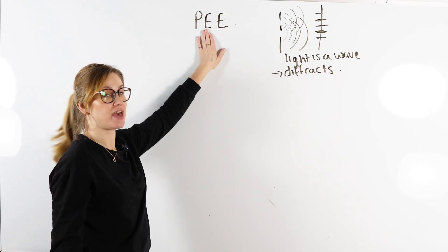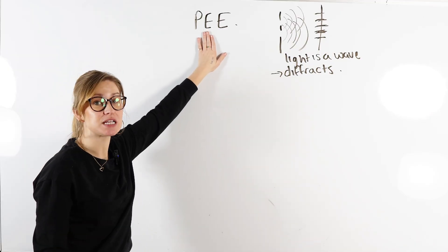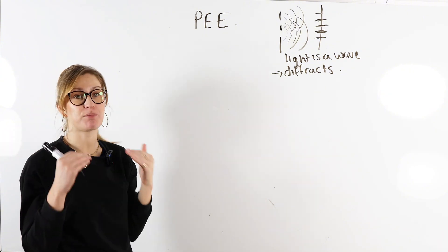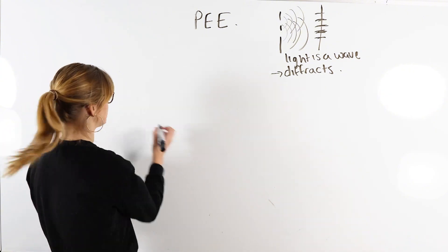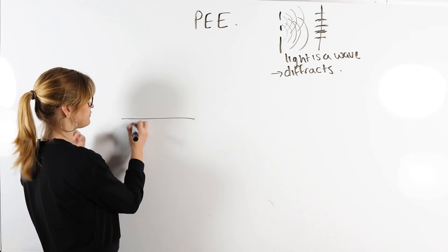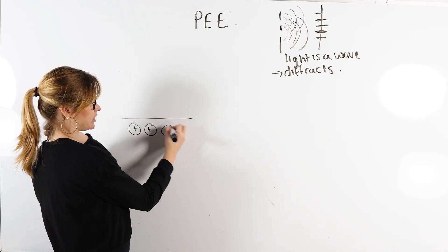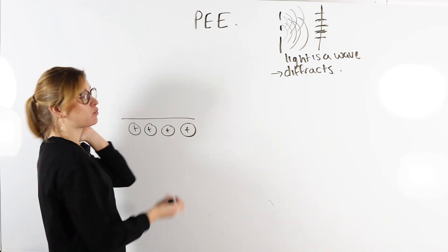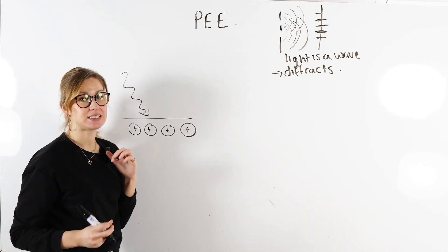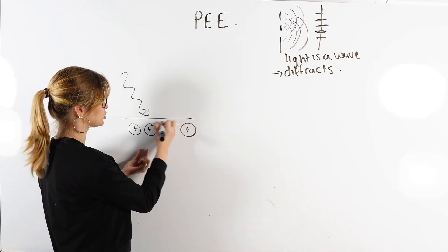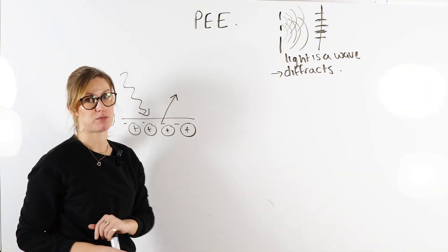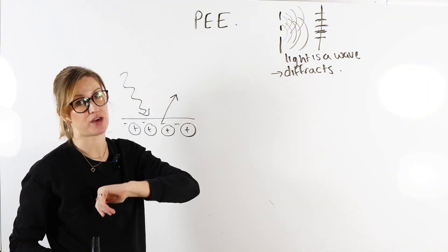The photoelectric effect showed that light behaves as particles. What they did was they had a surface of a metal — we know metal is made of positive ions and delocalized free electrons — and they shone light at the metal to see if they could get the electrons on the surface to be emitted from it. That's why it's called the photoelectric effect.